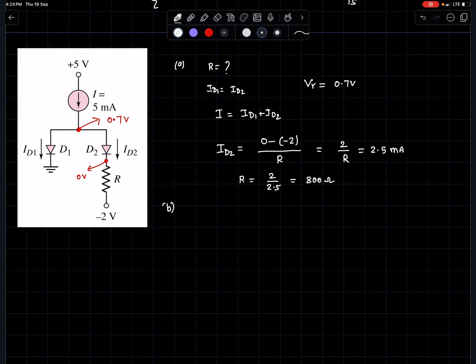For part (b), id1 equals 0.2 times id2. Clearly, id2 plus 0.2 times id2 must equal 5 milliamperes. So 1.2 times id2 equals 5 milliamperes.